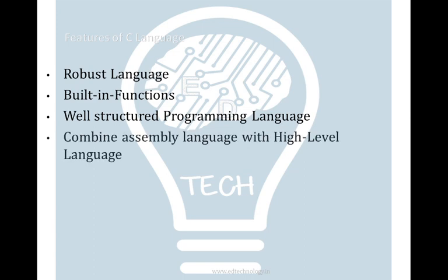C is considered one of the most structured languages and is one of the bases of procedural programming paradigm. It also has a combination of assembly language as well as high-level language, which is why it is known as a middle-level language. It has the speed and agility of assembly languages and also the user interface and other features similar to high-level languages.